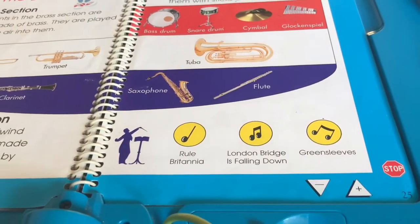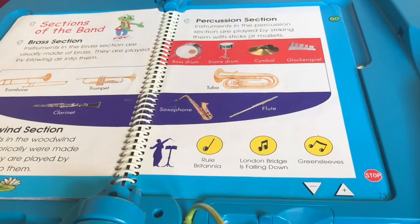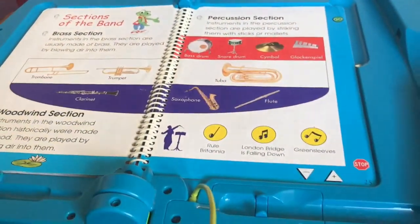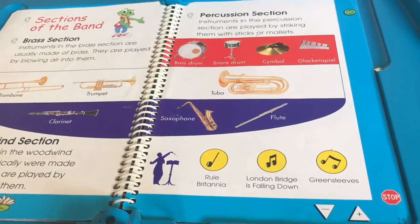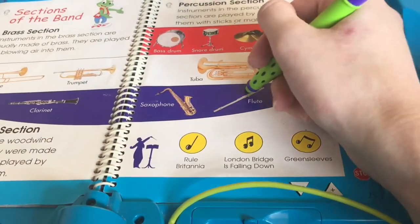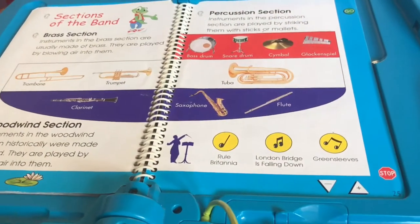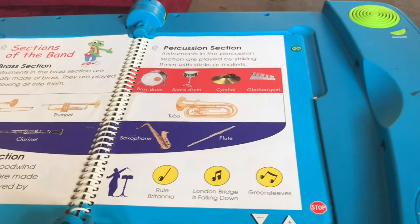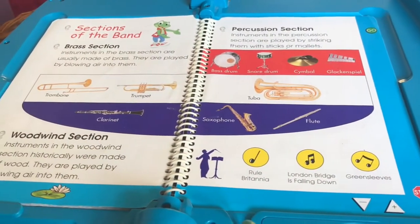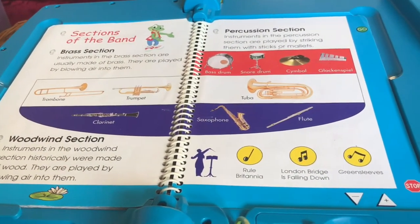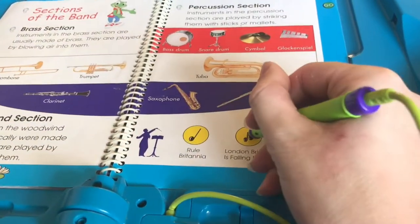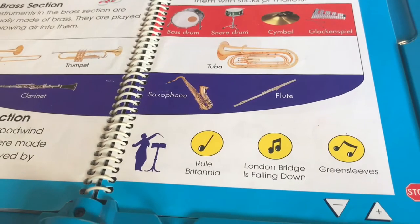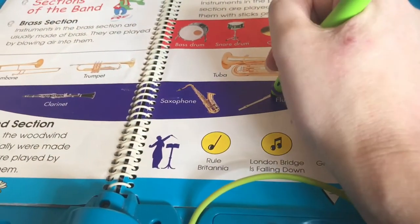I realise I forgot to touch the flute while doing Rural Britannia and London Bridge is Falling Down. Rural Britannia — touch an instrument or section to hear this song. Flute. London Bridge is Falling Down — touch an instrument or section to hear this song. Flute.